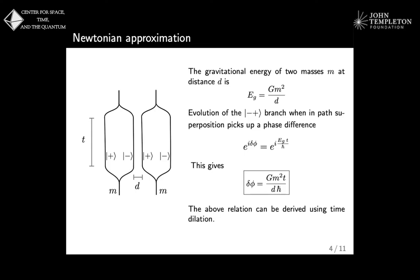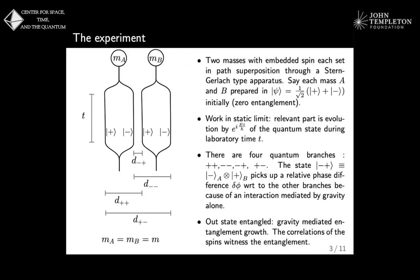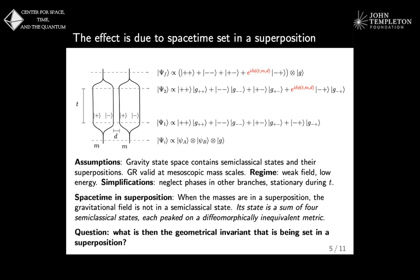So this is how it was treated in these papers. They said that while this is free evolution, it's going to pick up a phase which is going to be energy times time over h-bar, the gravitational potential energy which is this formula which we learned from high school. And then you just replace here, you get this phase. And they were saying we can imagine an experiment in the medium term, in 15 years, where we can choose masses, time and distance, such that we can actually do this in the lab.